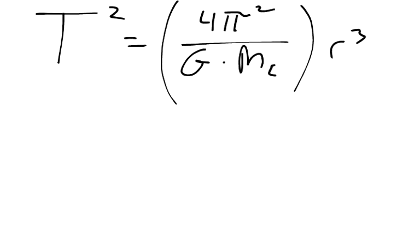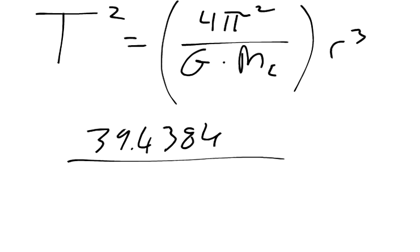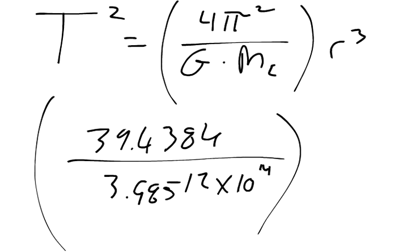And so we just got to plug in some numbers. So 4 pi squared is 39.4384, and G is 6.673 times 10 to the negative 11th. The mass of the Earth is 5.9 times 10 to the 24th. So multiply those together, you get 3.98512 times 10 to the 14th, and then multiply that by the radius cubed.